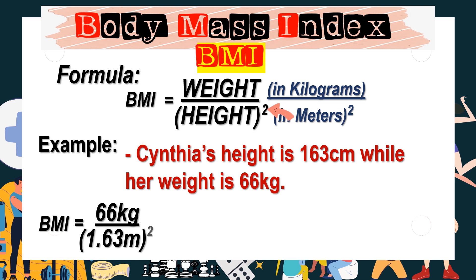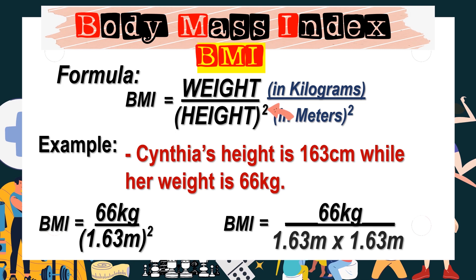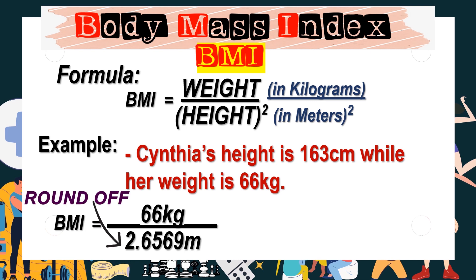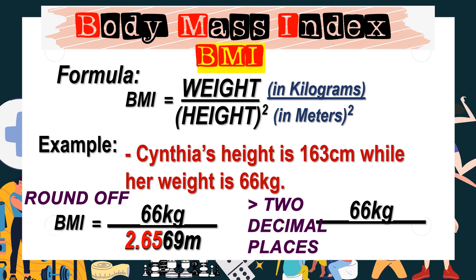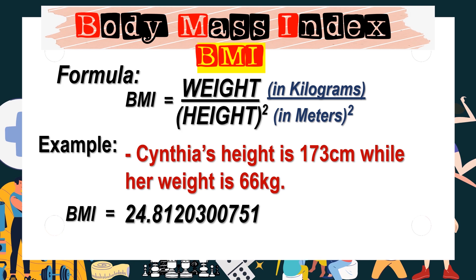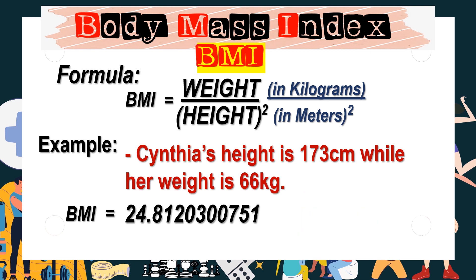BMI equals 66 kilograms over 1.63 meters squared. We multiply the height twice: 1.63 meters times 1.63 meters equals 2.6569 meters squared. We round this to 2.66 meters squared. Then we divide 66 kilograms by 2.66, and the final answer, rounded to two decimal places, is 24.81.